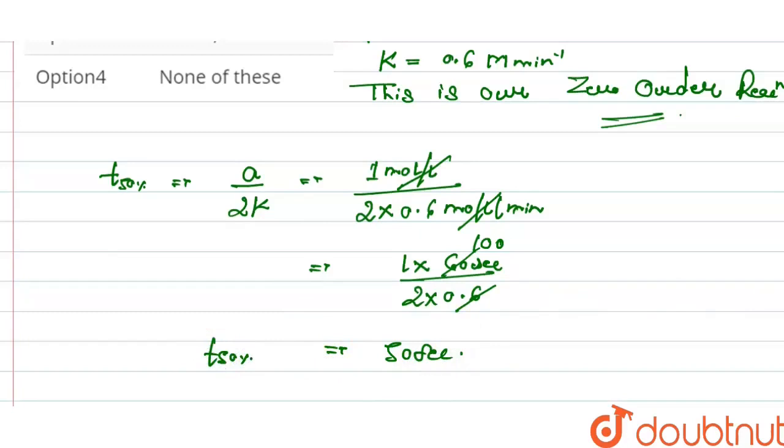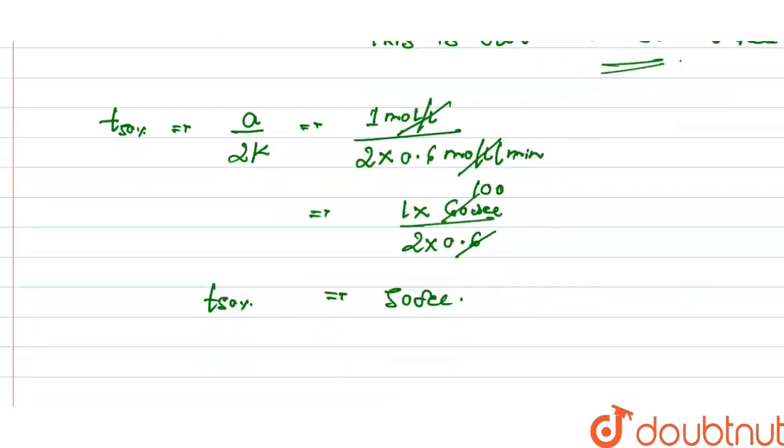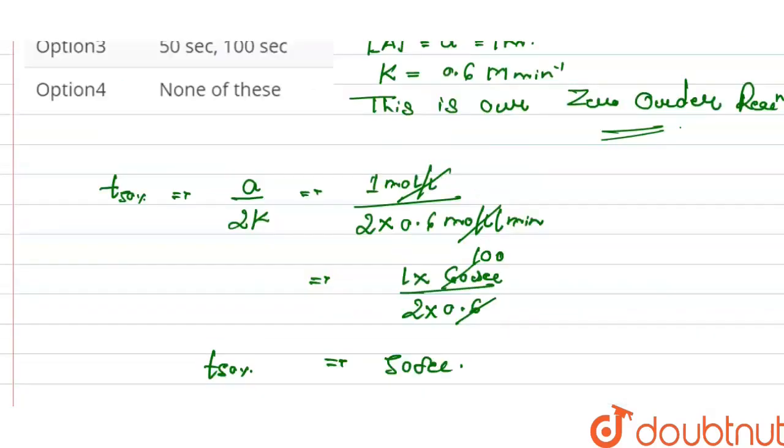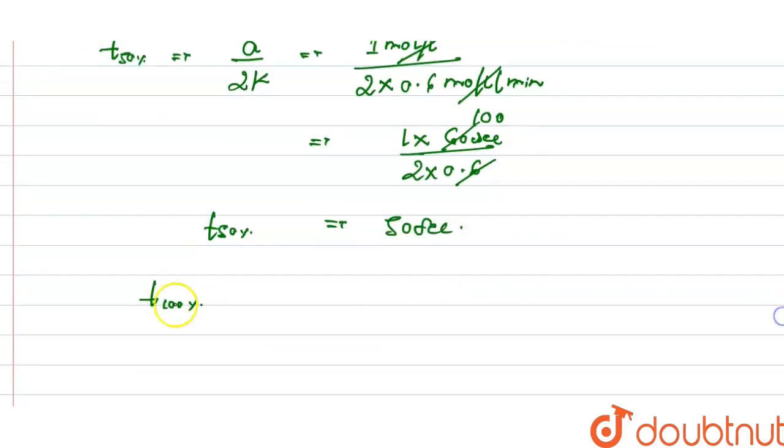Now we have to find the full life, that is completion time. We know it is found by multiplying the half-life by 2. So it becomes 100 seconds.